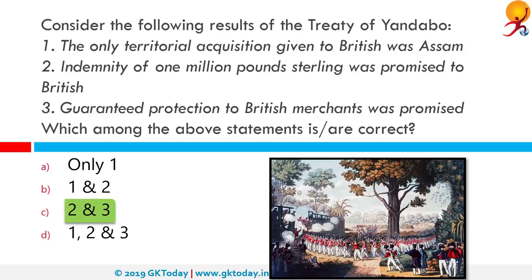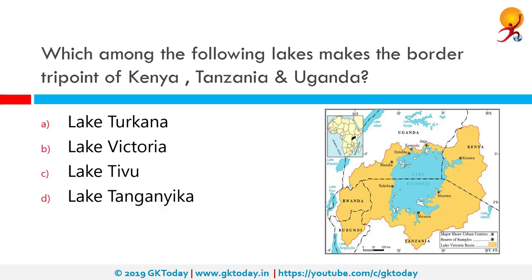Which among the following lakes marks the bordered tri-point of Kenya, Tanzania and Uganda? It's Lake Victoria. It is one of the African Great Lakes, named after Queen Victoria by explorer John Hanning Speke, the first British resident to document it. With a surface area of approximately 59,947 square kilometers, Lake Victoria is Africa's largest lake by area, the world's largest tropical lake, and the world's second largest freshwater lake by surface area after Lake Superior in North America.